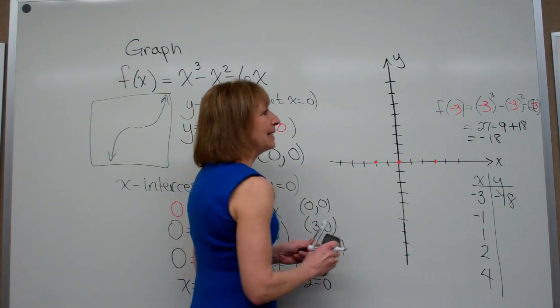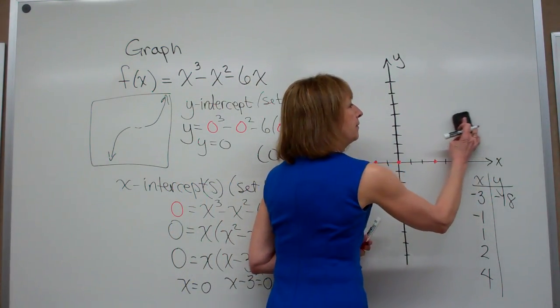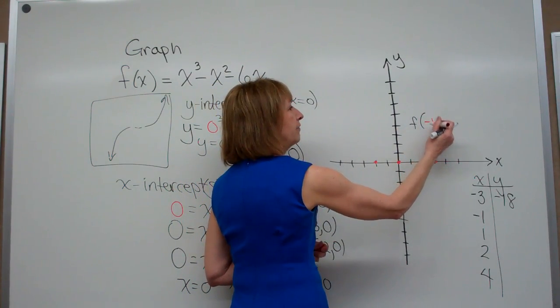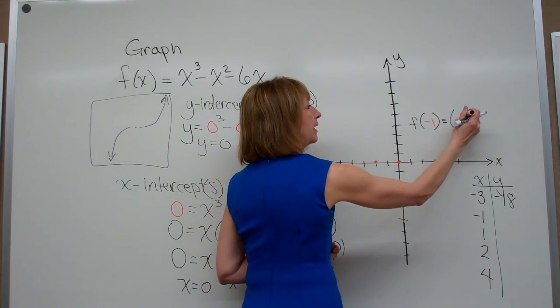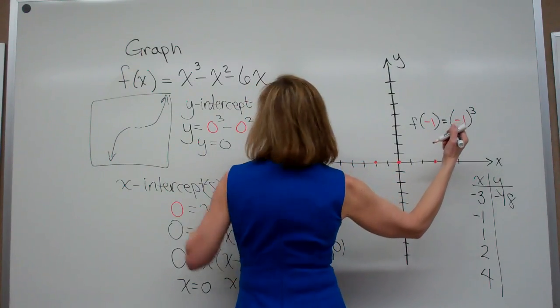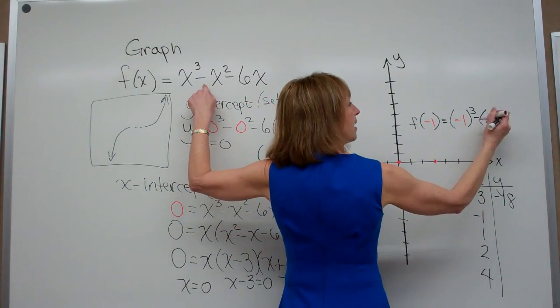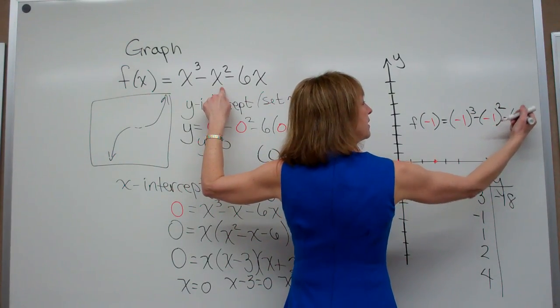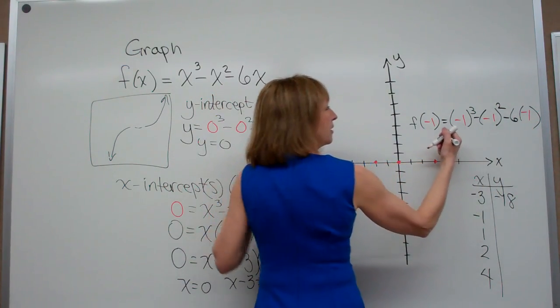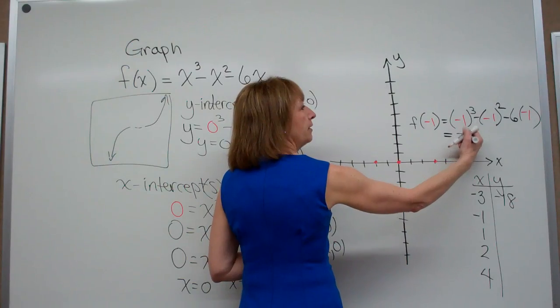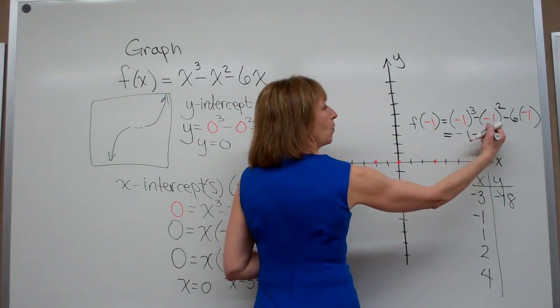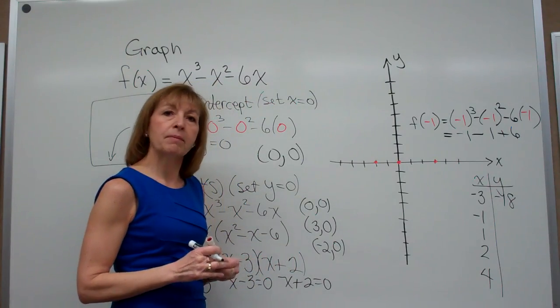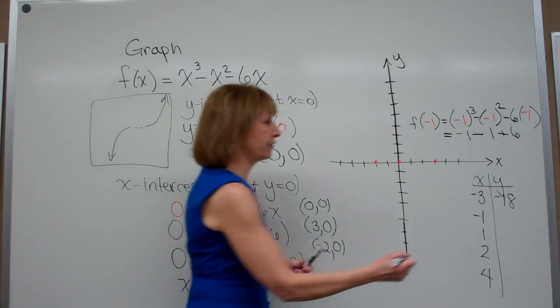When x is -1, our f(-1) = (-1)³ - (-1)² - 6(-1). So that's -1, and then -1, and then +6. So -1 - 1 is -2, plus 6 is 4.